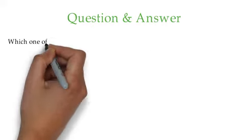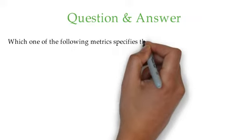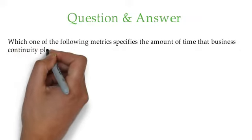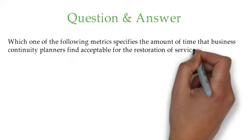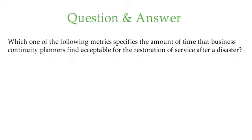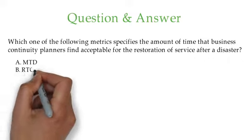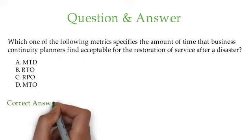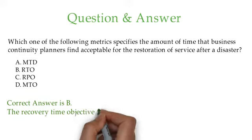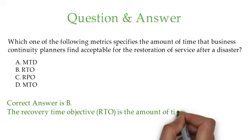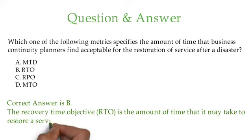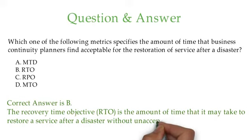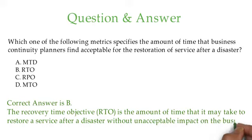Question number one: Which of the following metrics specifies the amount of time that business continuity planners find acceptable for the restoration of service after a disaster? Option A: MTD. Option B: RTO. Option C: RPO. Option D: MTO. The key point is amount of time, so the correct answer is B. The recovery time objective is the amount of time that it may take to restore a service after a disaster without unacceptable impact on the business.